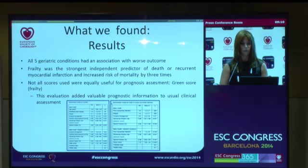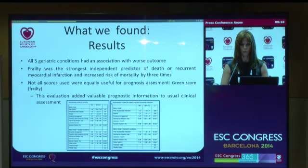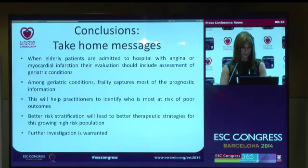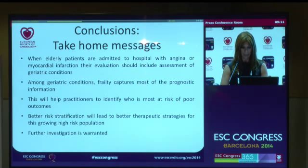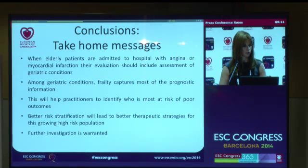We found that all five geriatric conditions have an association with worse outcomes in these elderly patients. Frailty was the strongest independent predictor of death or recurrent myocardial infarction and increased the risk of mortality by three times. We conclude that when elderly patients are admitted to hospital with angina or acute myocardial infarction, their evaluation should include the assessment of geriatric conditions, as frailty captures most of the prognostic information. This will help practitioners identify who is most at risk of poor outcomes in the setting of an acute coronary syndrome.